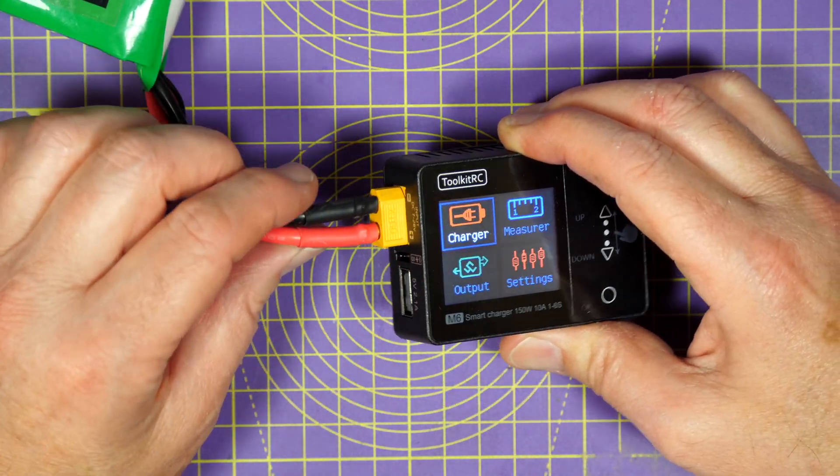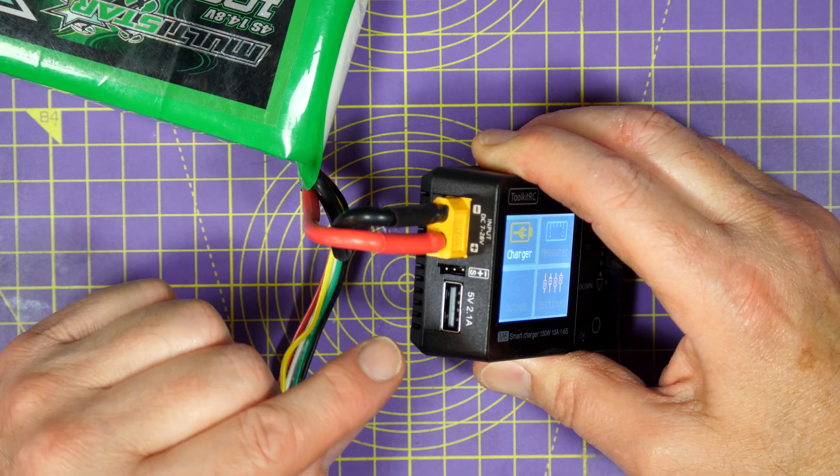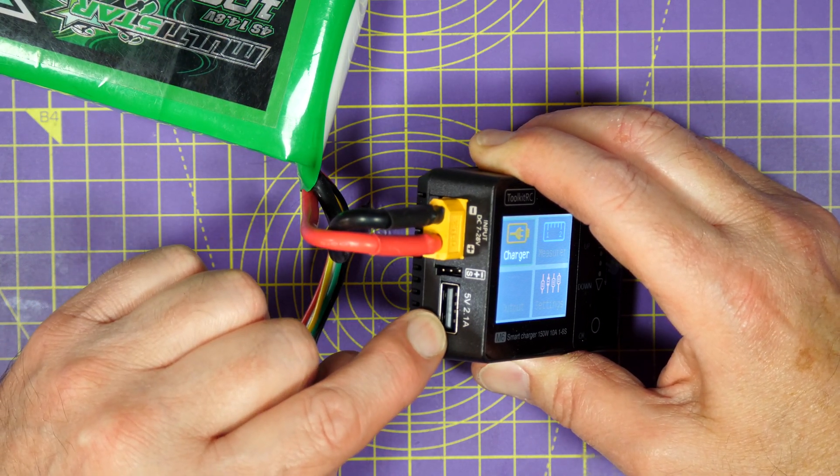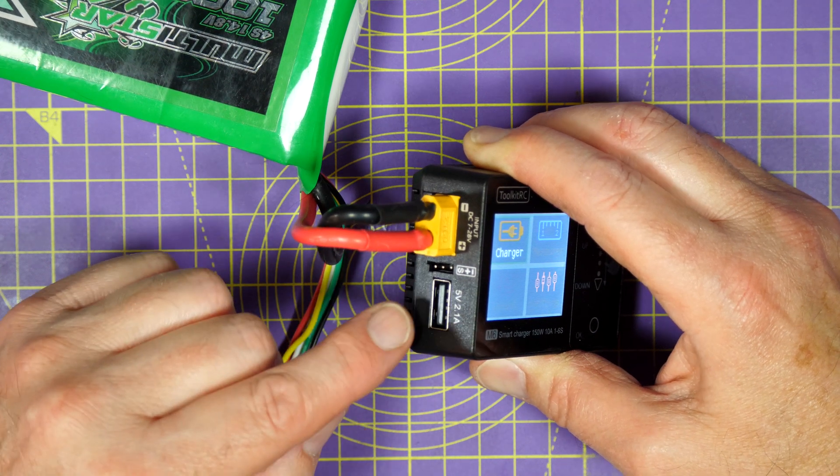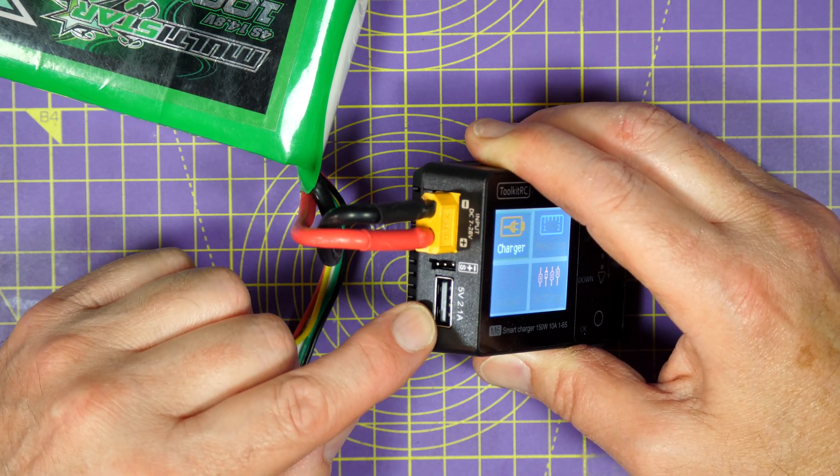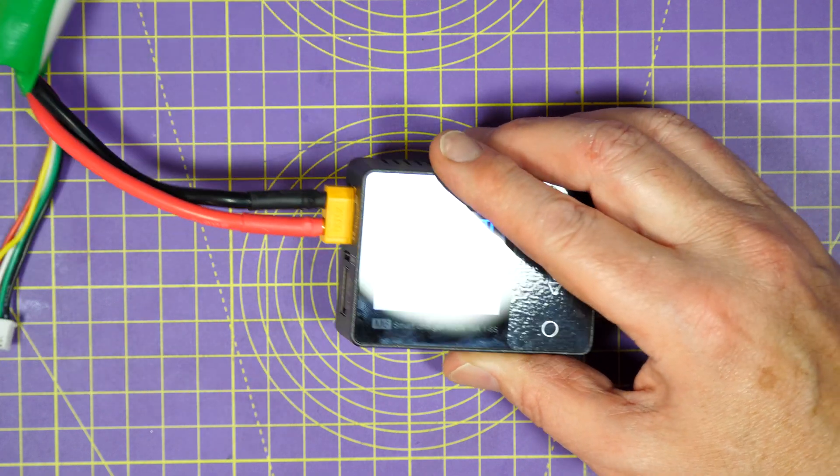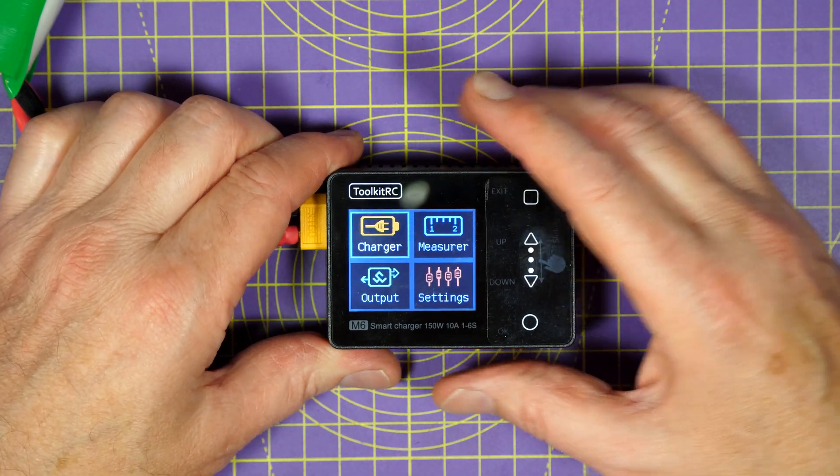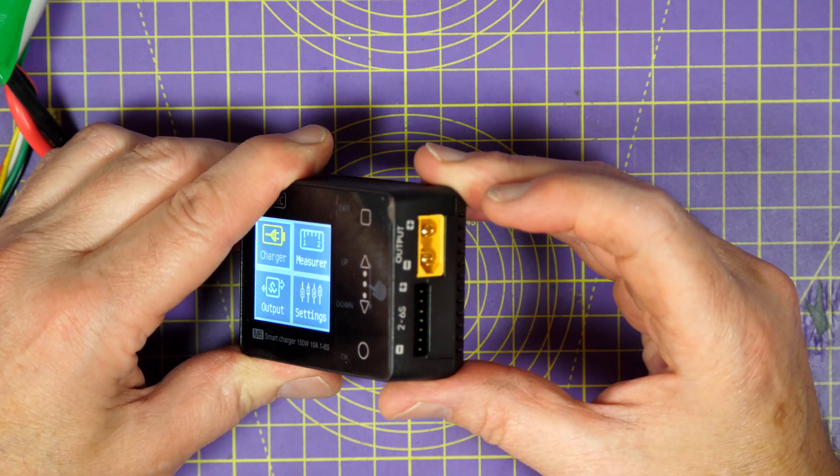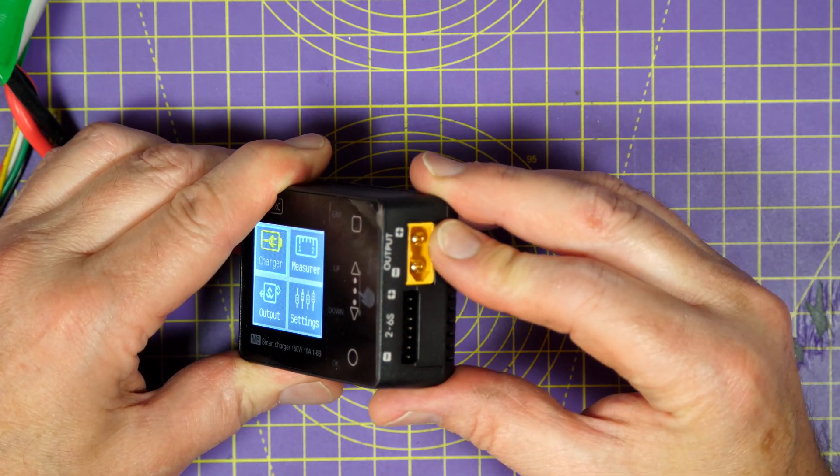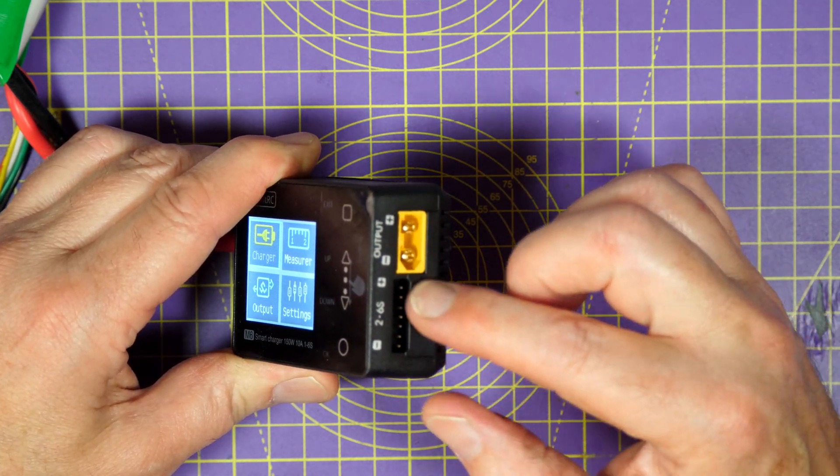And as well as the XT60, on this side there's a USB port, and you can use that for charging external devices, phones, and so on. And you use this to update the firmware as well. And Toolkit RC bring out firmware on a fairly regular basis. And on this side is the main XT60 output, and the plug for your balance lead here.